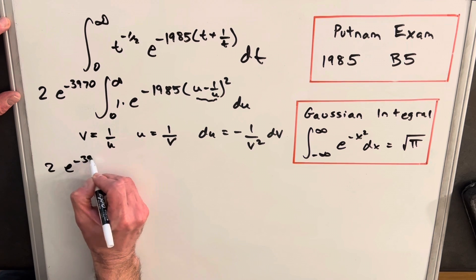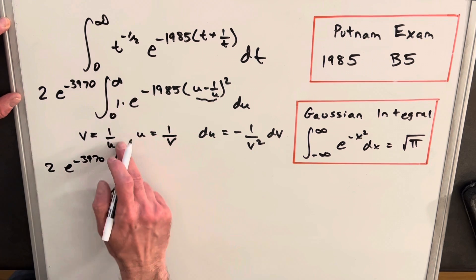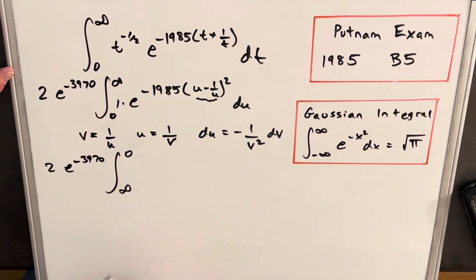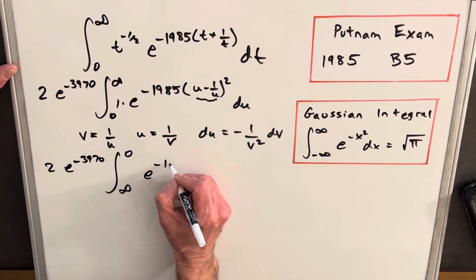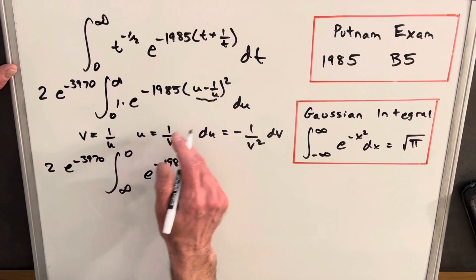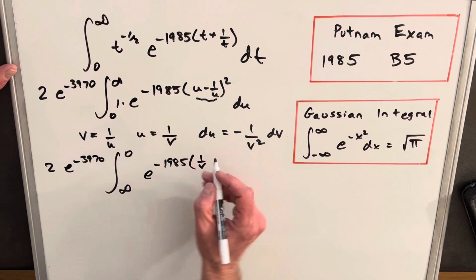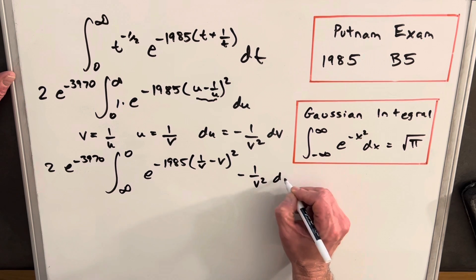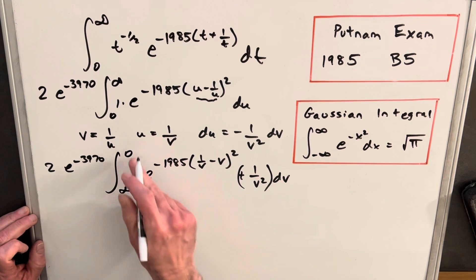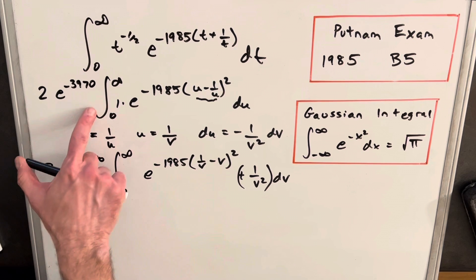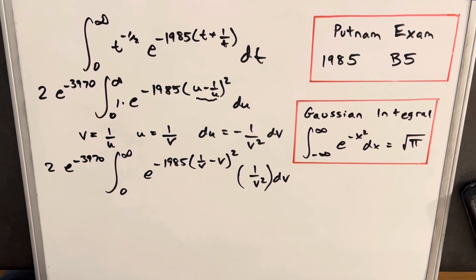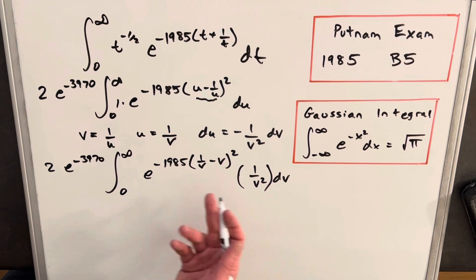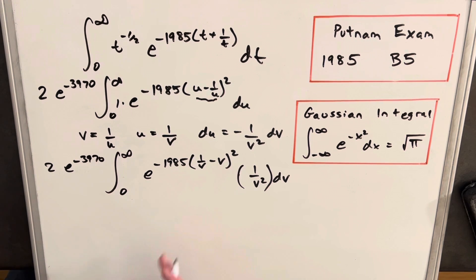We take the minus sign and flip the bounds back to 0 to infinity. Then, since we have a definite integral and the variable name doesn't matter, we change the variable back to u. We want to line this up with what we had before. We have (1/u minus u) squared here, which is the same as (u minus 1/u) squared since we're squaring — multiplying by minus 1 and then squaring gives 1. So the order doesn't change the value.